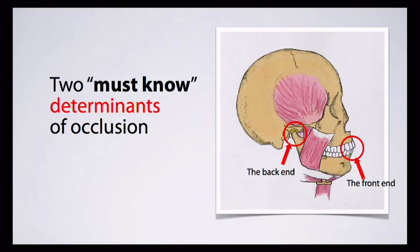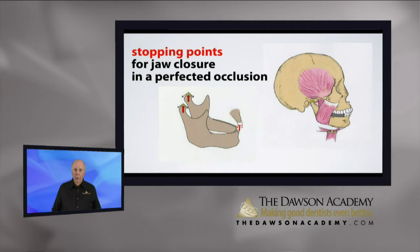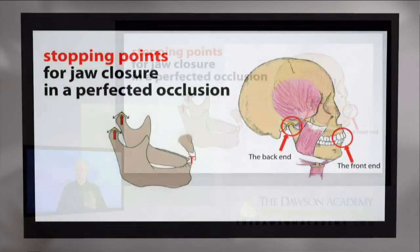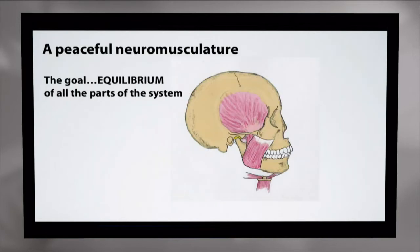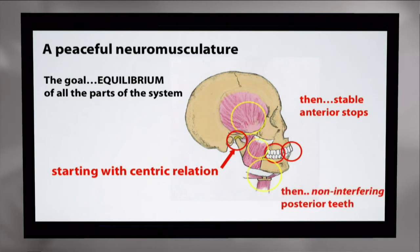Here are two must-know determinants of occlusion. To illustrate this, let's remove the back teeth. We want the back end completely seated and the front end completely seated. If we get that right, we can bring the back teeth into contact between those two, and we'll have equilibrium of all parts of the system: centric relation in the back, stable anterior stops in the front, non-interfering teeth in the back. If we get those three elements right, the muscles will be coordinated, functional, and peaceful.